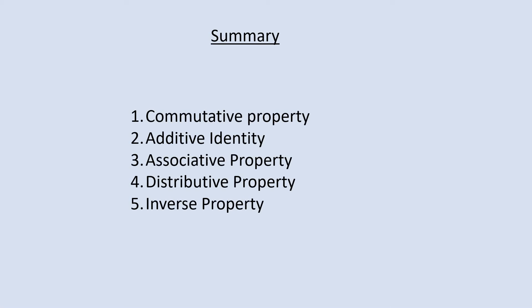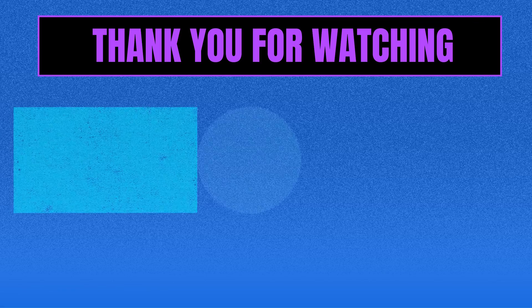Let's recap everything you learnt. In this lesson you learnt about: commutative property of addition, in which order of addition does not matter; identity property, in which any number added to identity element 0 gives you the same number; associative property, where grouping of numbers does not change the result of addition; distributive property, where a sum multiplied by a number becomes the sum of the product of addends with that number; and inverse property, where a number added to its opposite gives you the identity element 0.